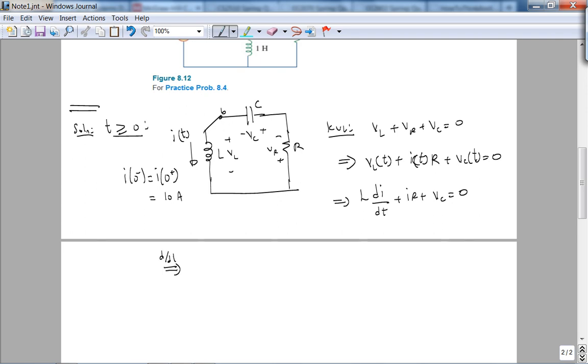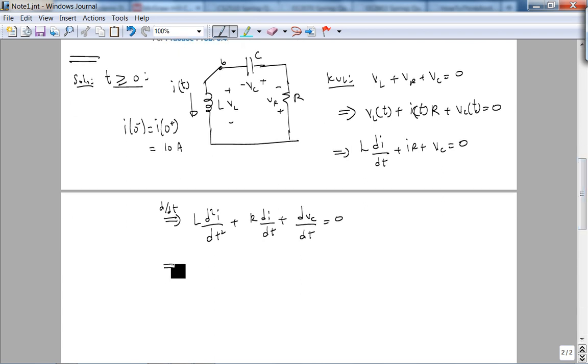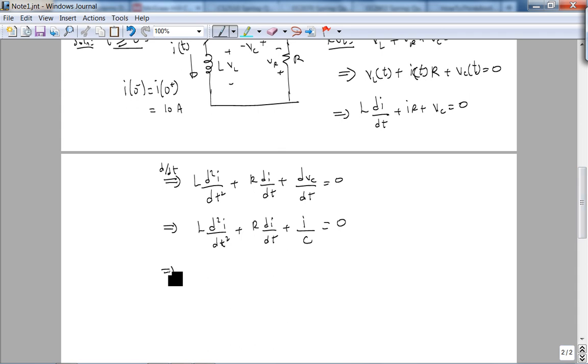If I differentiate both sides with respect to time, I get LD squared I DT squared, plus RDI dt, plus DVC dt is zero. I can even eliminate DVC dt by using the IV relationship across the capacitor. So I get LD squared I DT squared plus RDI dt plus I over C equals zero. Now I have a differential equation. Using our dot notation, I double dot plus R over L I dot plus I over LC equals zero. I of zero plus we know is 10 amps.